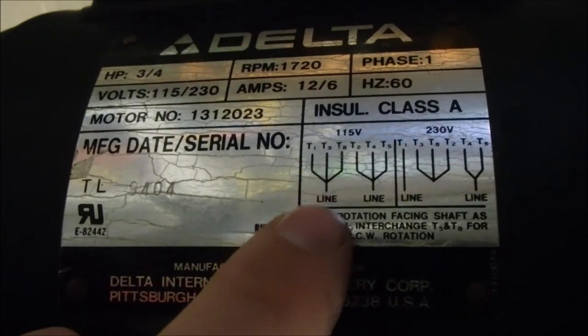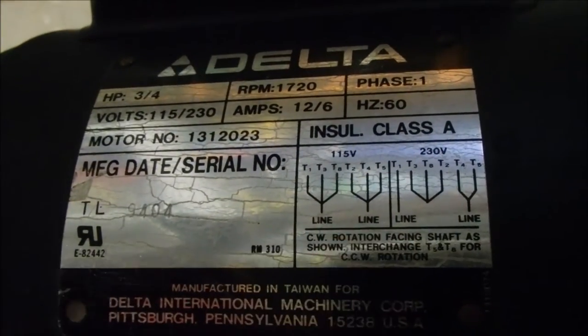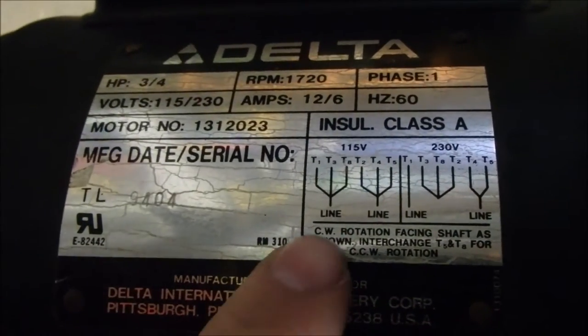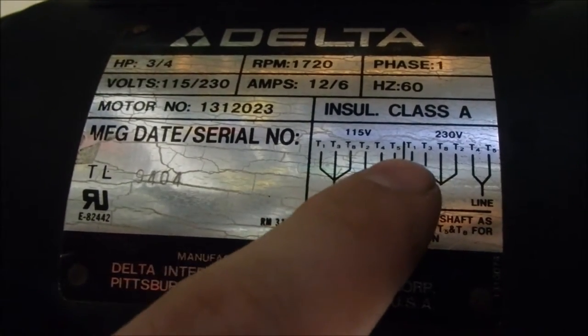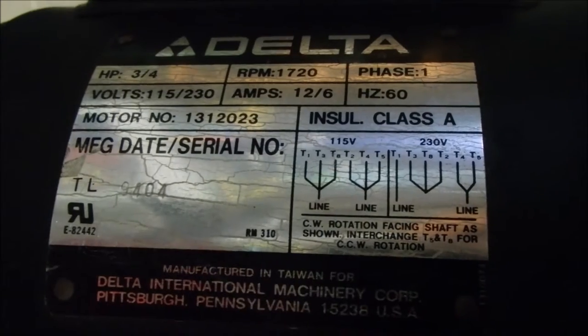I've got a Delta drill press running on 120 volts. You put line here and neutral here, either way it doesn't matter. To change the rotation, all you have to do is change wire number 5, which is on the far right here, and number 8, which is on the far right here.